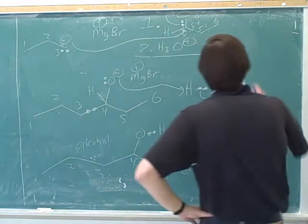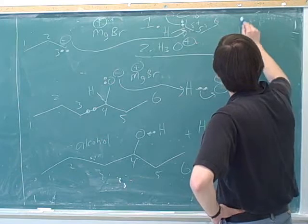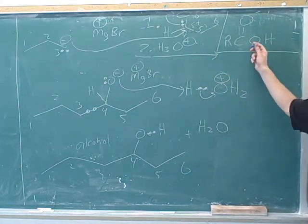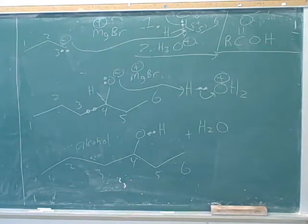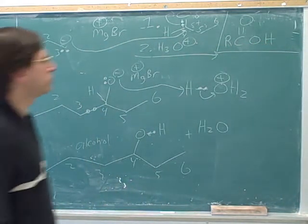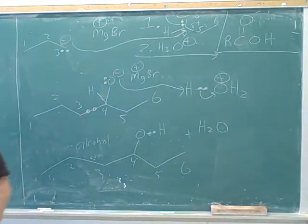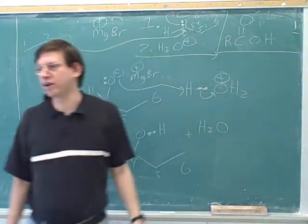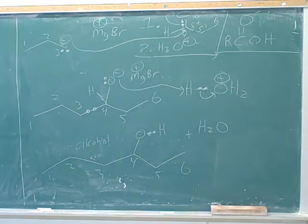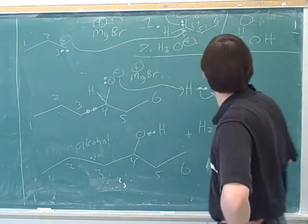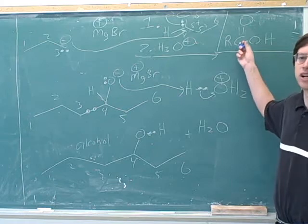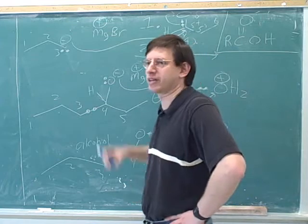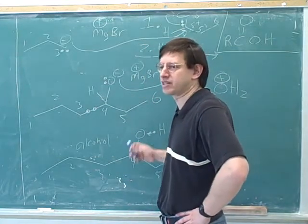Let me just do a quick aside. Do you remember what type of functional group this is? Carboxylic acid. I just wanted to warn you — this is not an alcohol, even though it has an OH group. This is not considered an alcohol OH. This is a carboxylic acid. An alcohol is not when you have the hydroxy on a carbonyl carbon. A carbonyl carbon attached to a hydroxy is called a carboxylic acid. A regular carbon attached to a hydroxy is an alcohol.